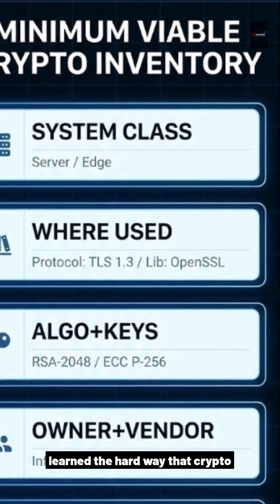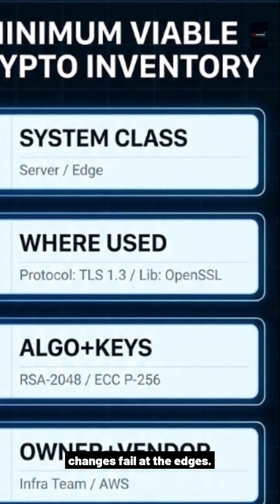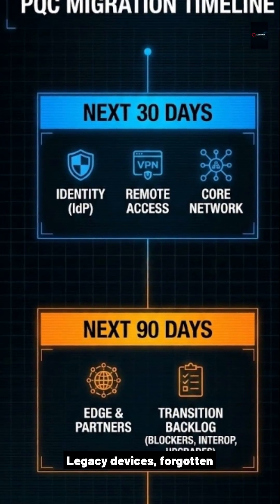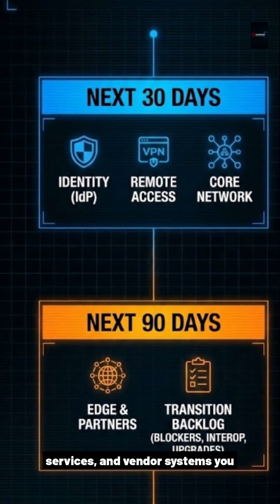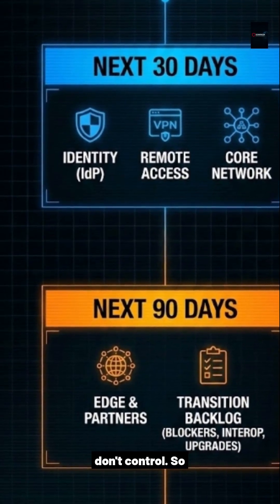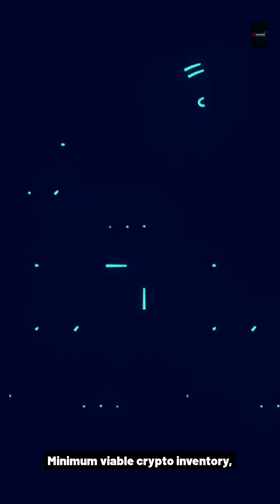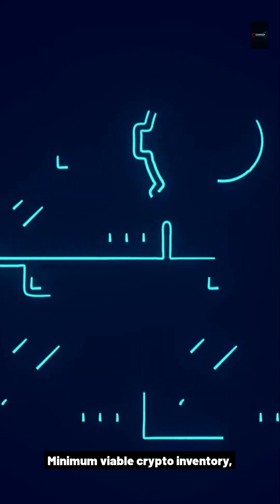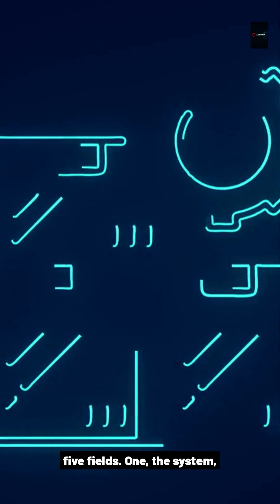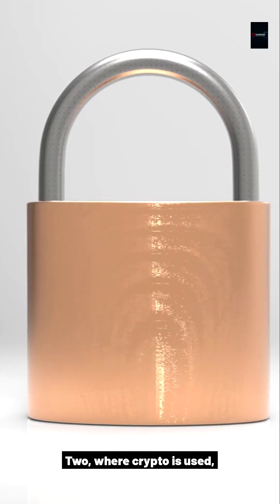Even certificate and algorithm transitions create outages when older environments can't handle modern certificate chains or deprecations. Organizations learn the hard way that crypto changes fail at the edges — legacy devices, forgotten services, and vendor systems you don't control. Here's the practical start: a minimum viable crypto inventory with five fields.